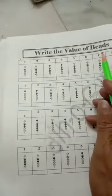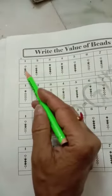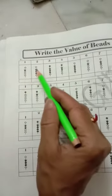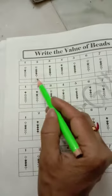Now page number 6. Write the value of beads. That means you count the dark beads and put the value. That means here is 1, then 1. 1, 2, 3 is 3.